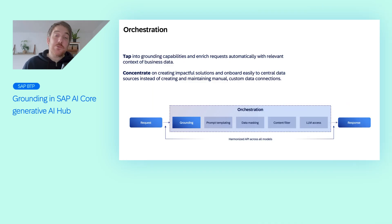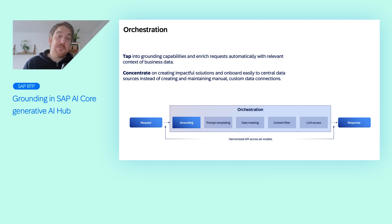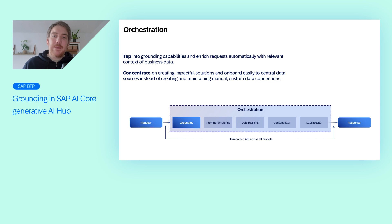We're happy to introduce grounding in SAP AI Core Generative AI Hub on SAP BTP, which enables you to index company content such as PDF and Word documents. Documents are processed, chunked, and stored as embeddings in the SAP HANA Cloud vector engine.